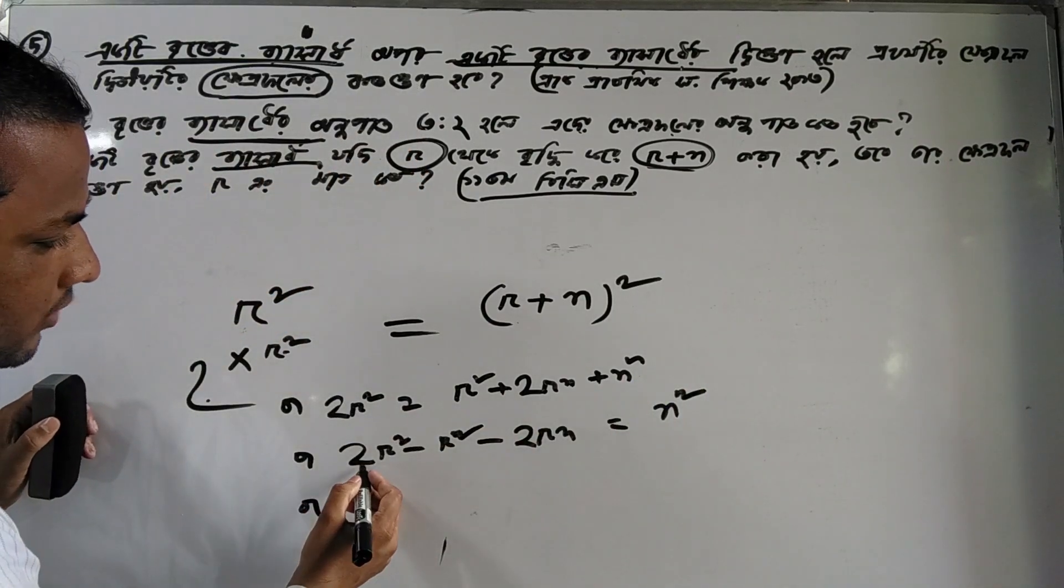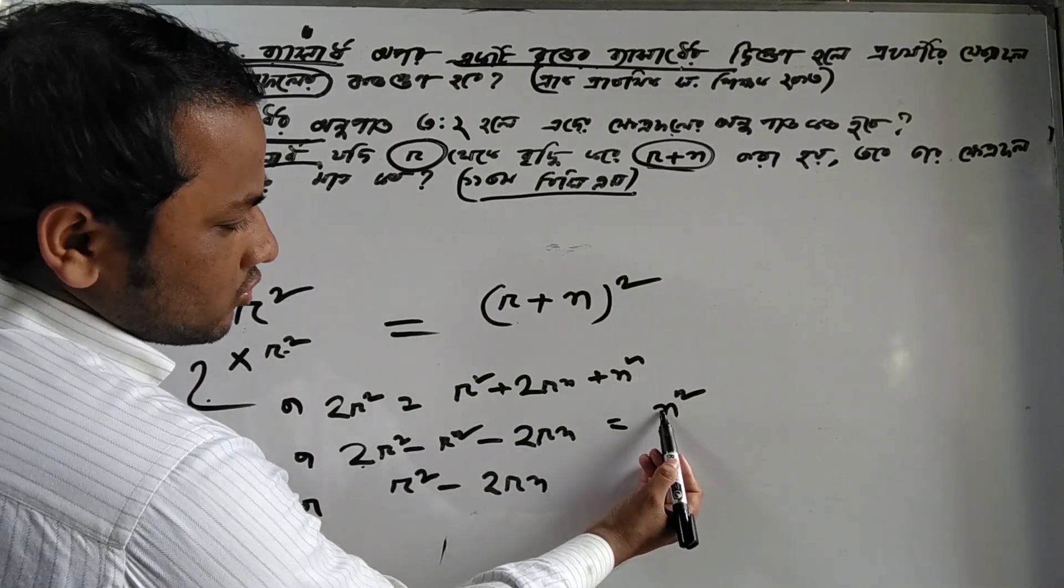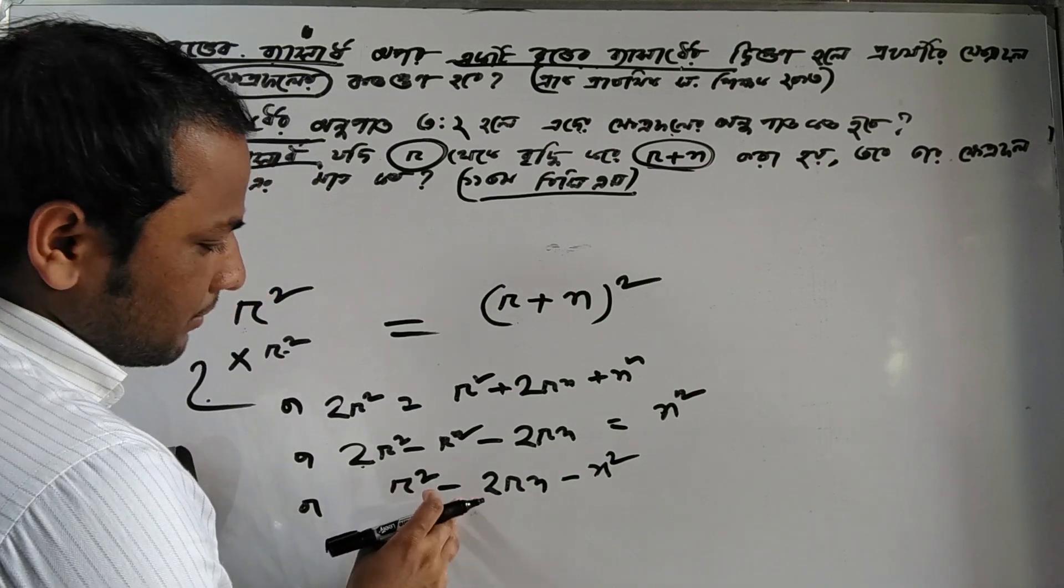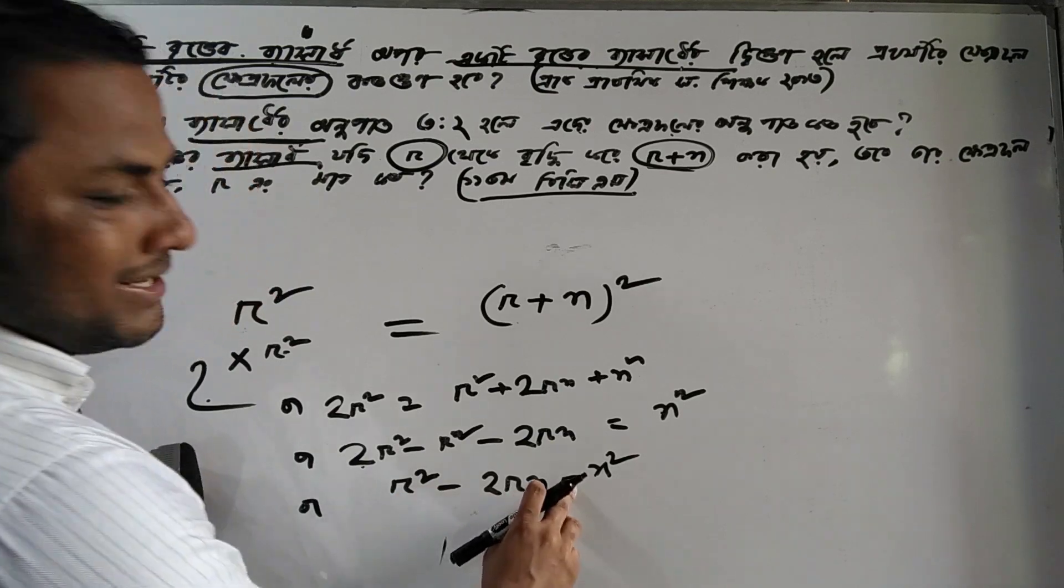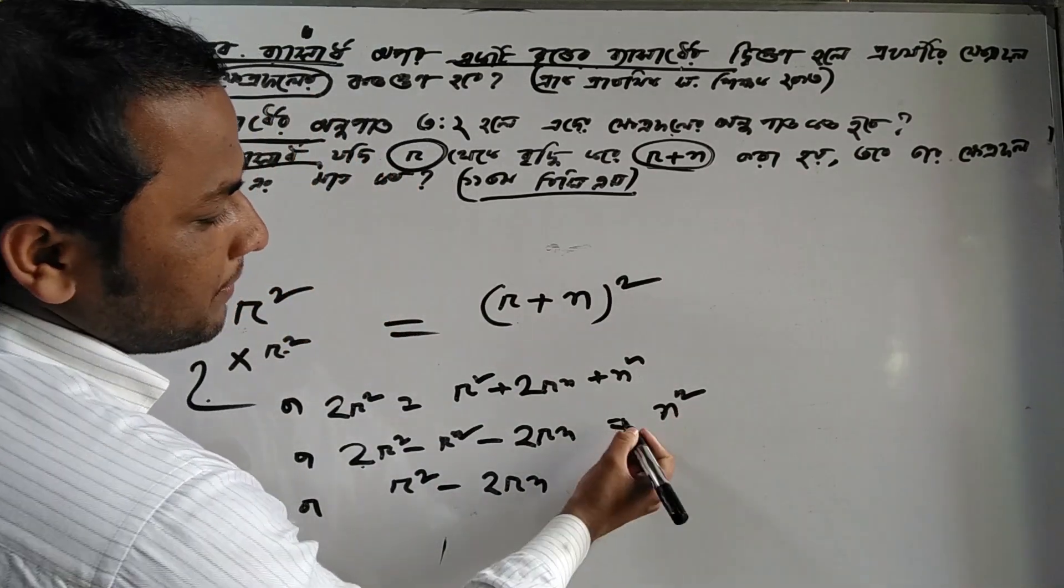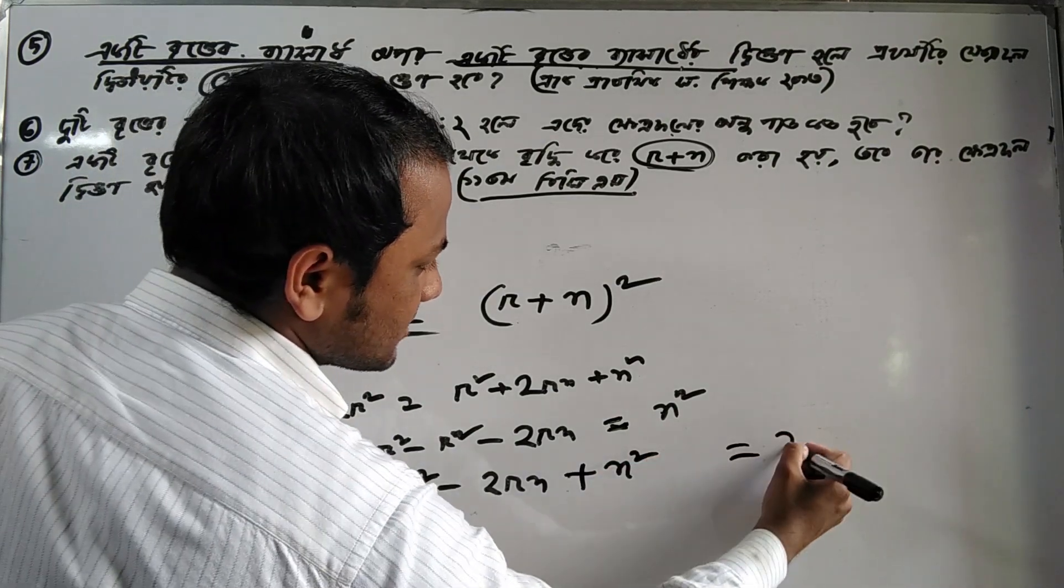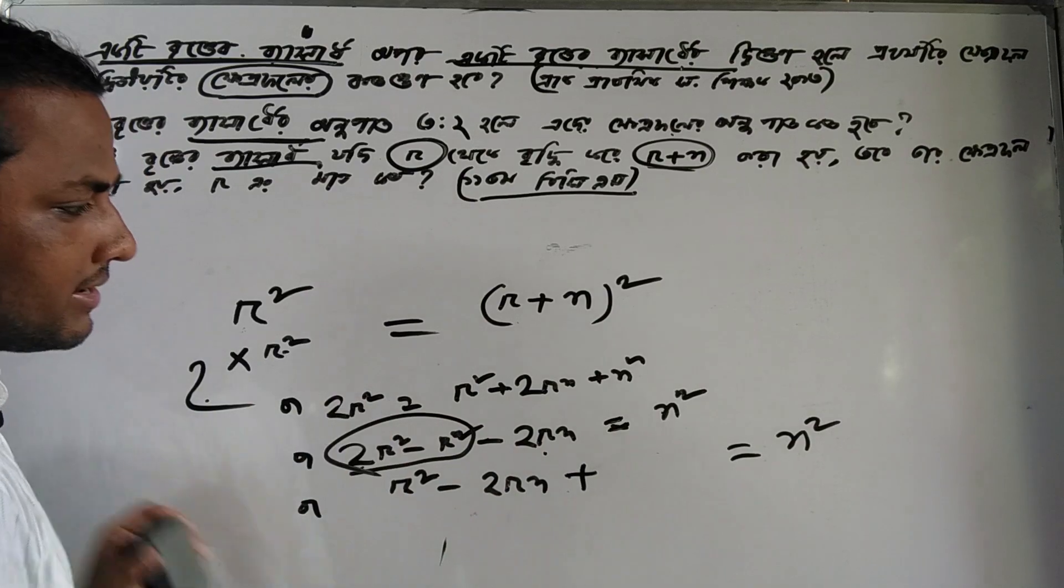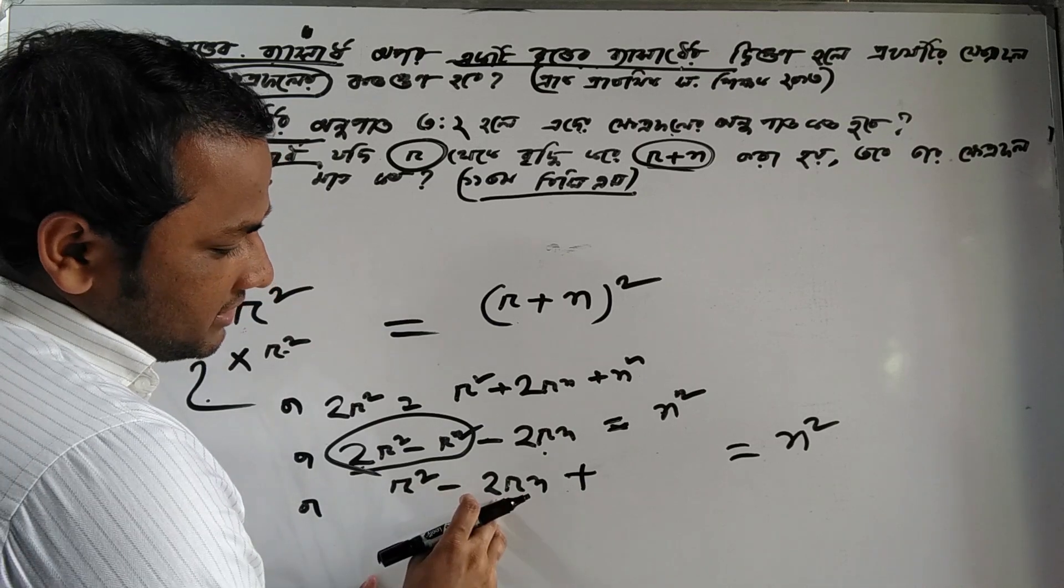After expanding, we get r squared minus 2rn minus n squared. This follows the formula a squared minus 2ab plus b squared, which equals (a minus b) squared. So we can rewrite this as (r minus n) squared.